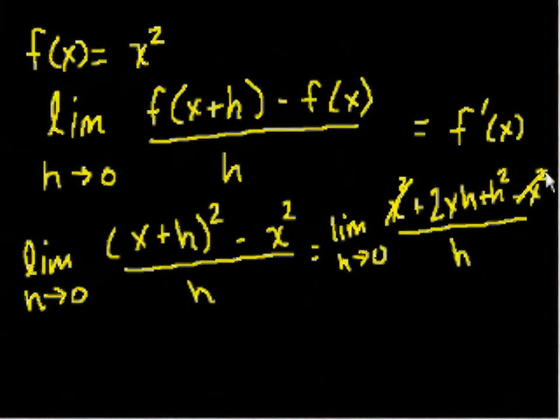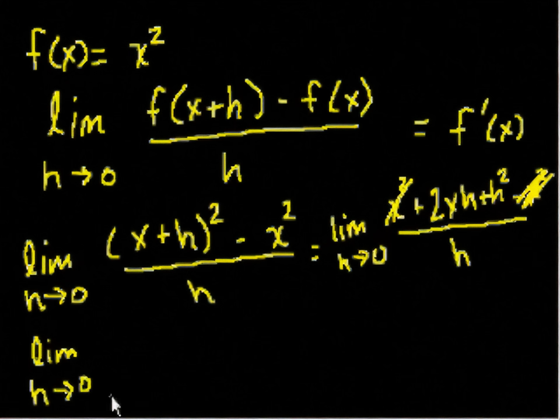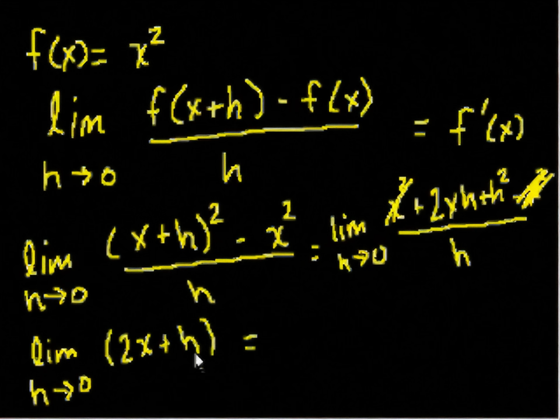Let's simplify this. This x squared cancels out with this minus x squared. And then we can divide the numerator and the denominator by h, and we're left with the limit as h approaches 0 of 2x plus h. Well, this is easy. This is just equal, if this goes to 0, this is just equal to 2x.